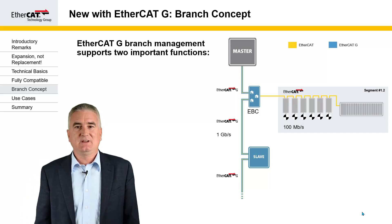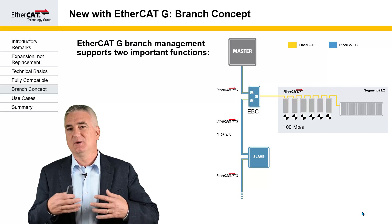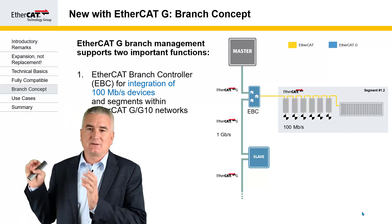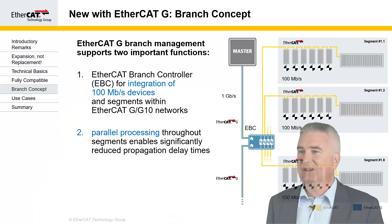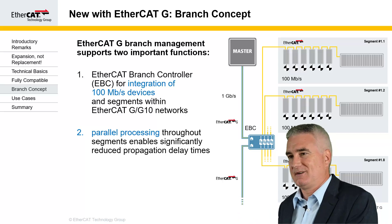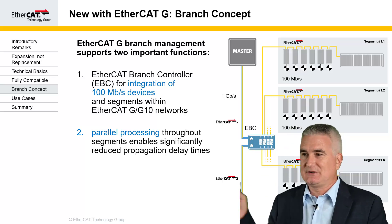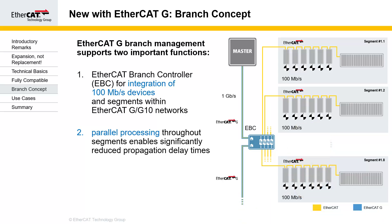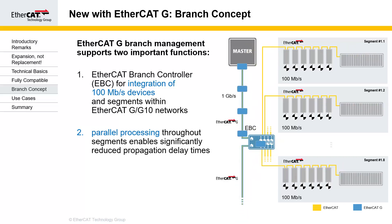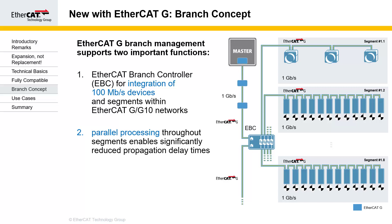What is new with EtherCAT-G is the so-called branch concept. This branch management gives us two important additional functions. First, it allows us to integrate 100 megabit segments into a gigabit backbone or a 10 gigabit backbone. Secondly, it gives us the ability to run multiple segments in parallel. Unlike before, where the frame went through all the devices and back to the master, now we have separate frames for each segment running in parallel. Frames arrive in gigabit mode; if segments underneath are 100 megabit, they are converted into 100 megabit frames, and on the way back changed to gigabit again and sent back to the master. This works as well if the segments underneath are gigabit segments — then the frames remain gigabit throughout.